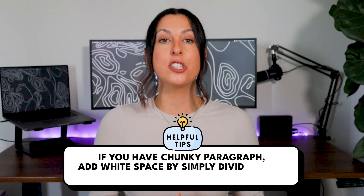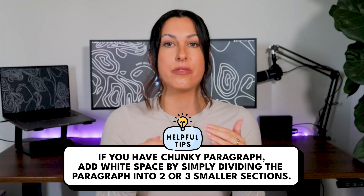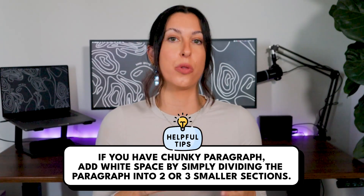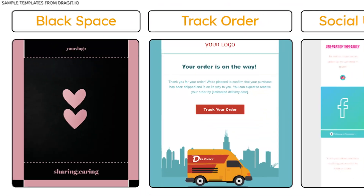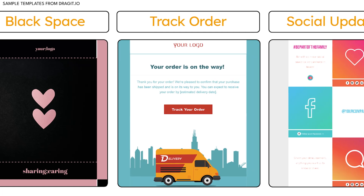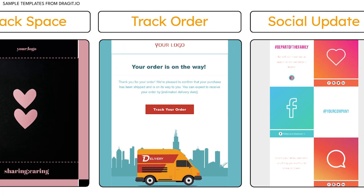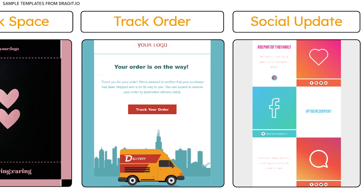A little tip: if you have a chunky paragraph, add white space by simply dividing that paragraph into two or three smaller sections. White space applies to every aspect of email design, and you'd be surprised how much a little space between elements can make a massive design difference and help the reader scan and digest the information better. All in all, it helps you get that click rate.